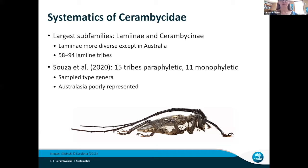For the Lamines, you can have anywhere between 60 to 90 tribes, depending on who you ask. In a recent effort to address this, there was an excellent study done by a lab in Brazil. They used molecular data to look at the Lamine tribes and found quite a few of them were paraphyletic, while some were actually monophyletic. But their sampling focus was on the type genera of the tribes, which is mostly in the northern hemisphere, so the Australasian region was quite poorly represented in their study.